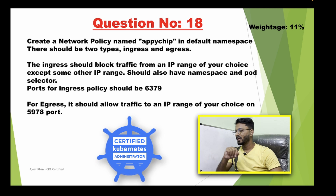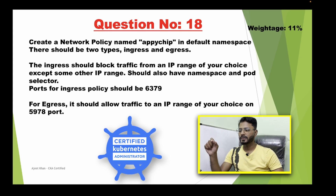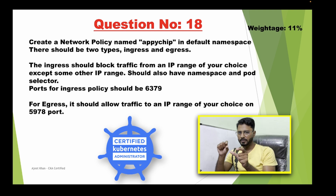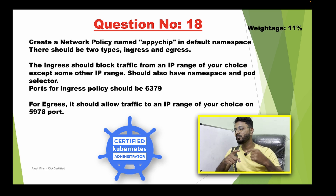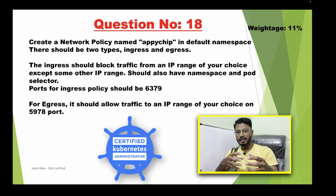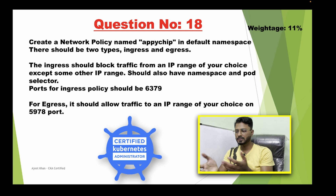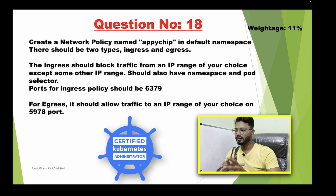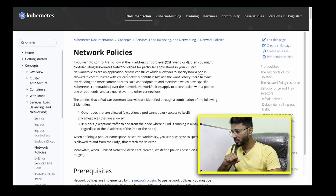The ingress policy should block traffic from an IP range of our own choice except some other IP range — so we need to allow one IP range and block another. It should also have a namespace selector and pod selector. The ingress policy should be applicable on port 6379. Then we need to create an egress policy that should allow traffic for an IP range of your own choice on port 5978. That's the question — now let's jump to the Kubernetes documentation.